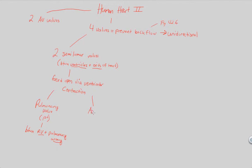The other semilunar valve is the aortic valve. This is the second semilunar valve, opening from left ventricle contraction. It is located between the left ventricle and the aorta. The aorta is a major artery that sends blood to the rest of the body via the systemic circuit. So the aortic valve functions mainly in the systemic circuit, whereas the pulmonary valve functions within the pulmonary circuit, just as their names imply.